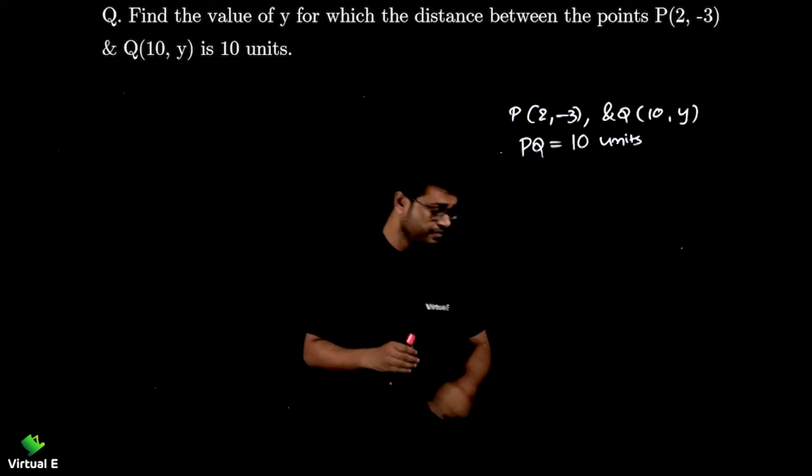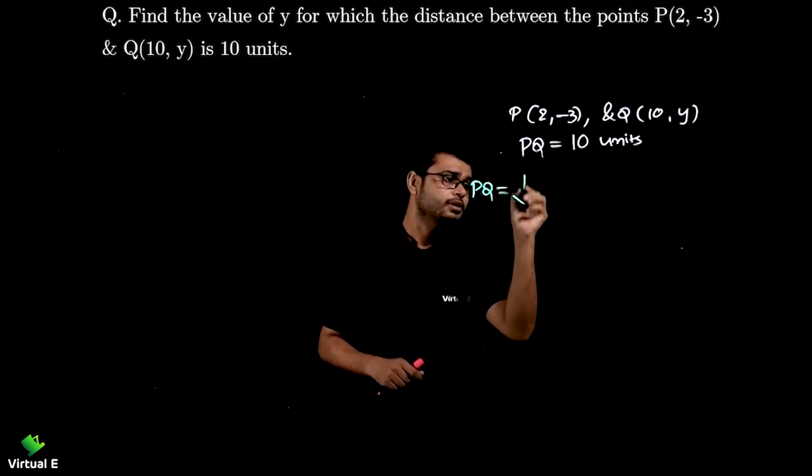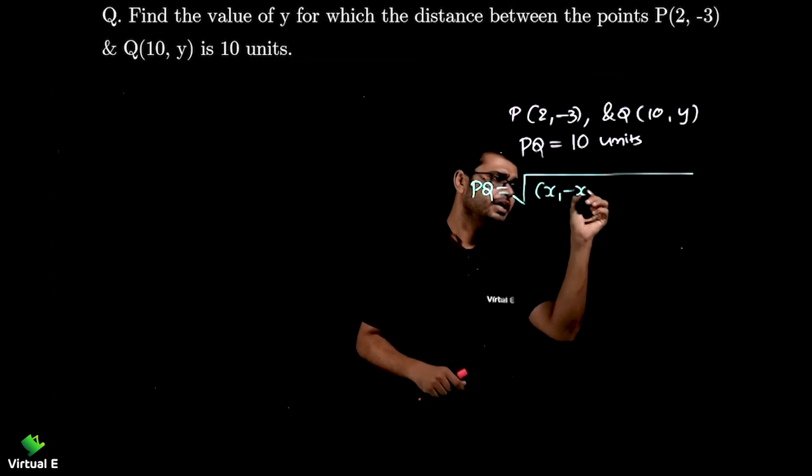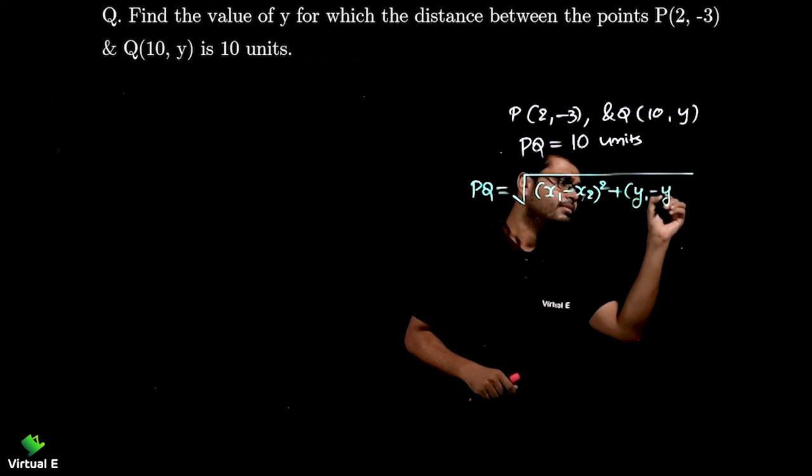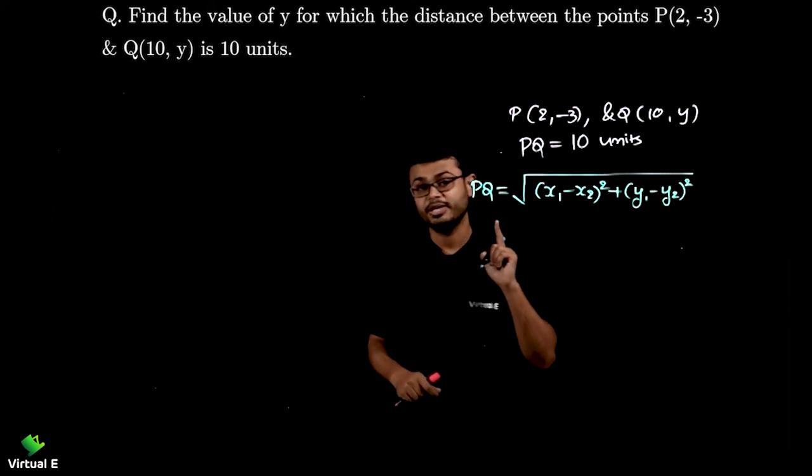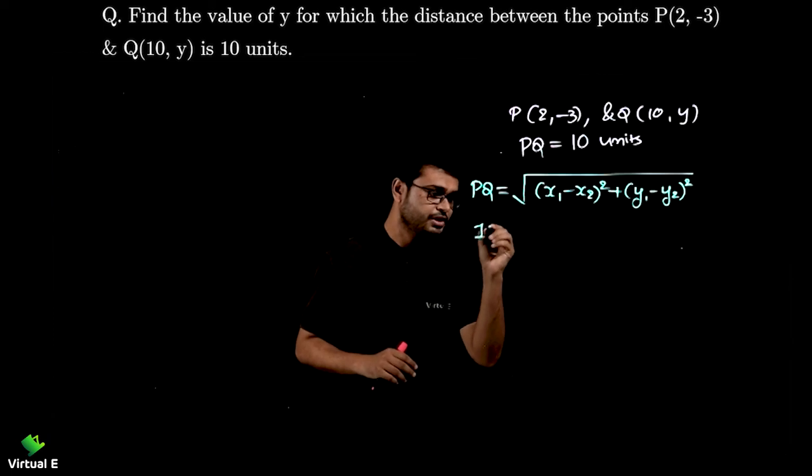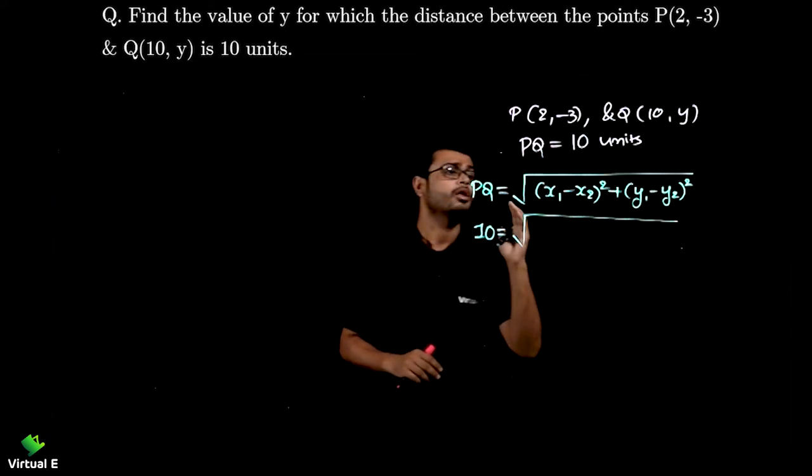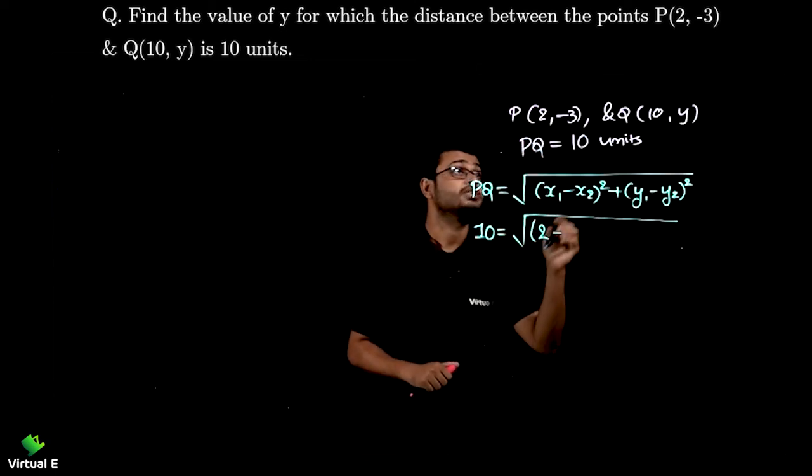Let's write the formula first then substitute the values. So PQ is equal to square root of (x₁ - x₂)² plus (y₁ - y₂)² whole square. So we have value of PQ. Remember don't forget to substitute the value of PQ.